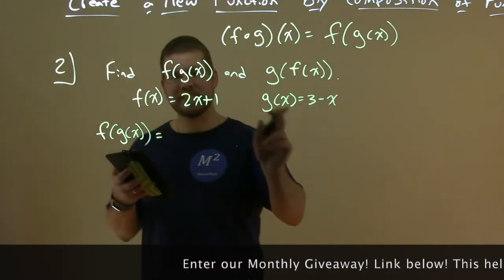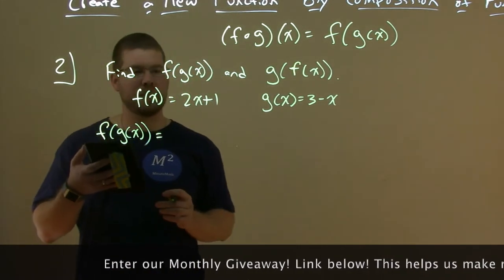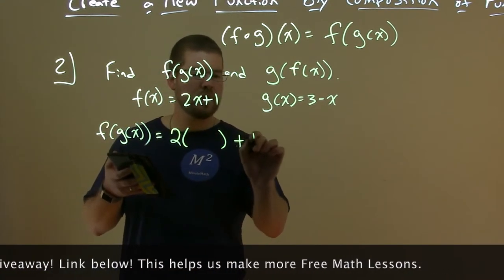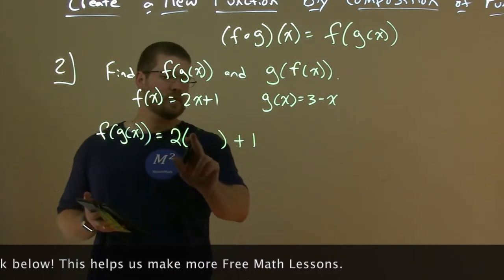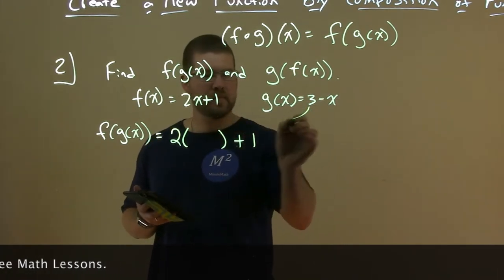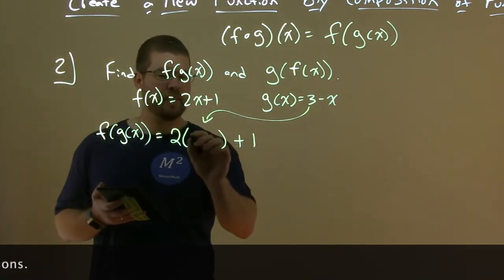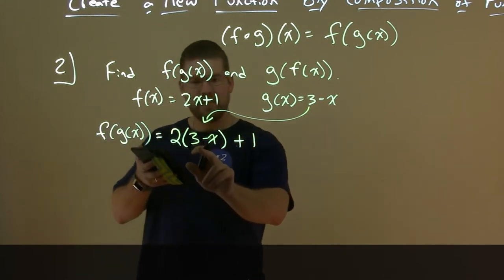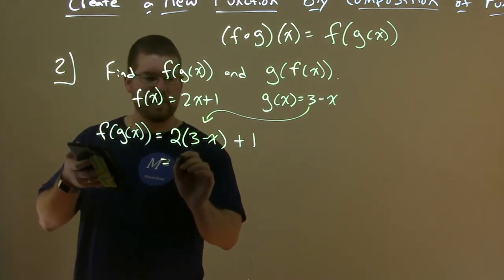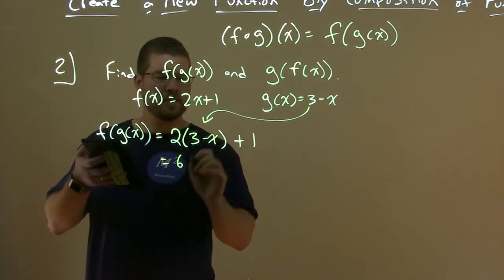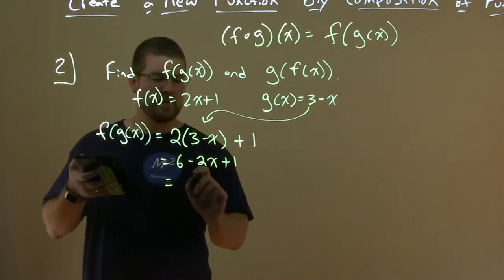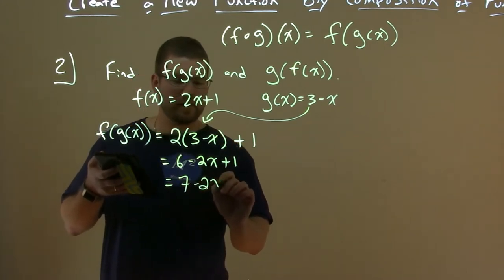Let's start with f of g of x. We're going to substitute g of x in for x in f of x. So write f of x as 2 times blank plus 1 — there's a space for x — and we're going to take g of x and plug that in: 2 times (3 minus x) plus 1. Now we simplify: 2 times 3 is 6, 2 times minus x is minus 2x, plus 1. Combining like terms, 6 and 1 is 7, so we get 7 minus 2x.